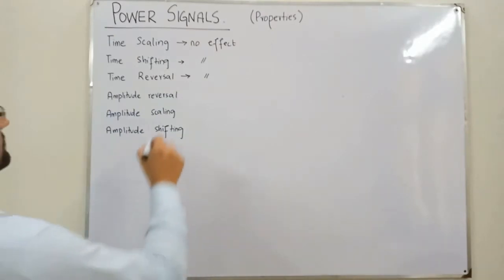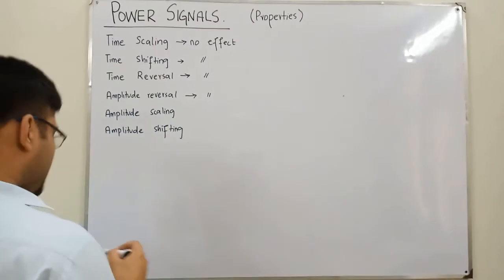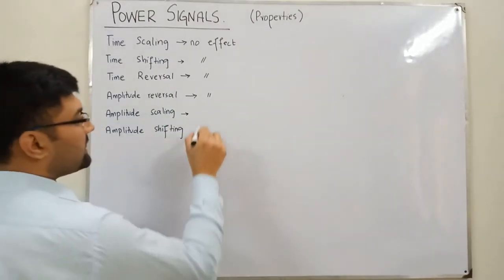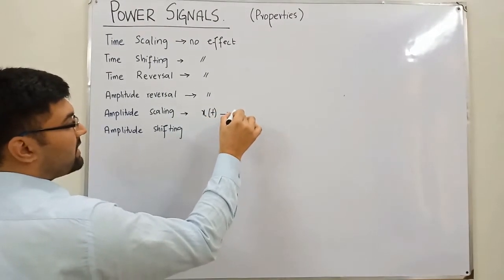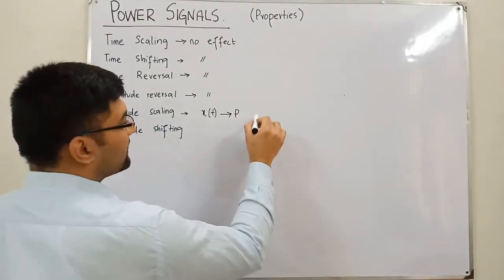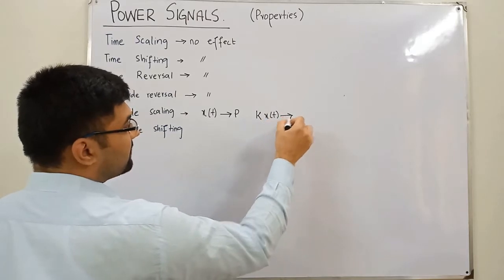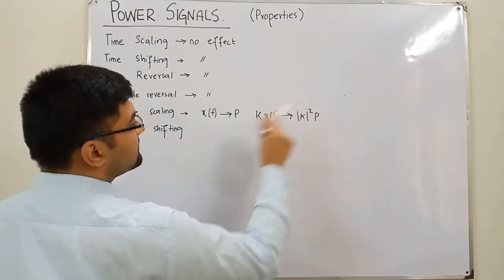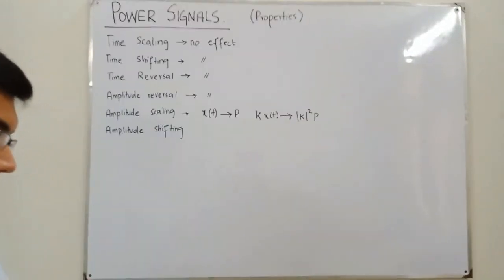Similarly, amplitude reversal has no effect on the power of a signal. Amplitude scaling does have an effect: if x(t) is the original signal with power P, and you scale the function k times to get k·x(t), then the power of this scaled signal would be |k|² times the original power P. This is the only important amplitude scaling result.